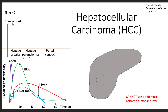Starting at time equals zero, the IV contrast has not had time yet to begin circulating through, so essentially this is without contrast. The liver all looks gray and pretty similar, so even if there was a lesion, we may not see it because it'll look the same as the rest of the liver.